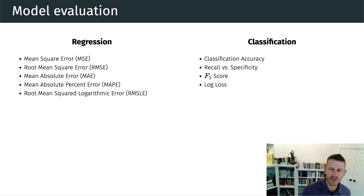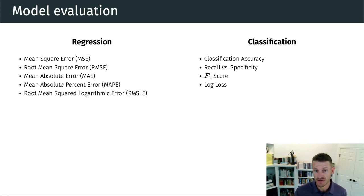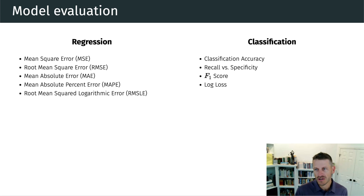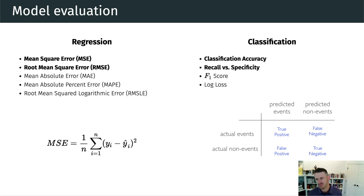Which loss function we use depends on what type of model we are training — whether it's a regression model or a classification model. Each loss function has its own purpose and tends to emphasize differences between predicted and actual values in slightly different ways. The most common loss functions are mean squared error and root mean squared error for regression, and classification accuracy, recall, and specificity for classification.